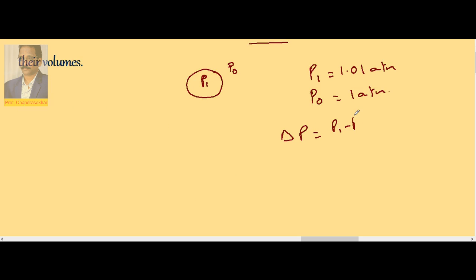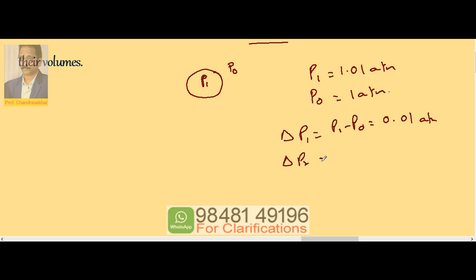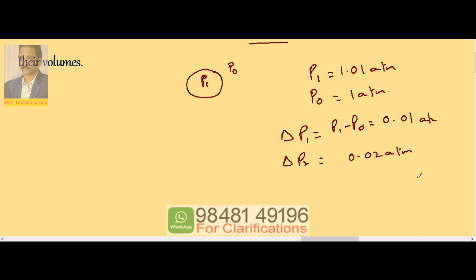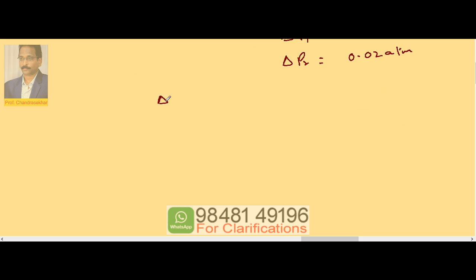That means in the first case it is 0.01 atmosphere. Similarly, delta P2 for the second bubble becomes 0.02 atmosphere since that is 1.02 minus 1.